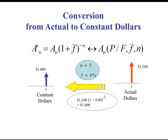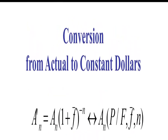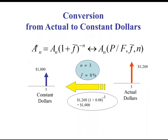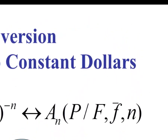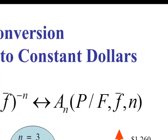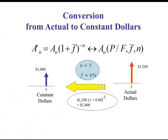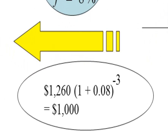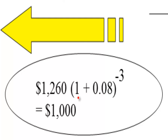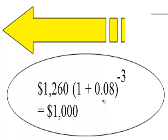Can we convert from actual to constant? Yes. With a little algebra, the equation becomes: A prime N equals A_N multiplied by (1 plus the average inflation rate) to the power minus N. It can also be written as A_N times (P given F) with average inflation rate F-bar and N periods. Using our example: 1260 multiplied by (1 plus 0.08) to the power minus 3 equals $1,000.